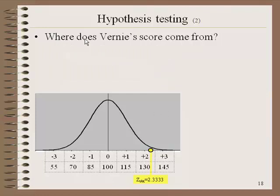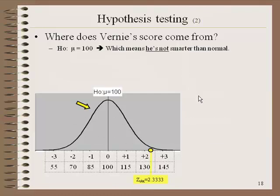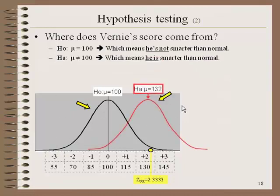The critical question is where does Vernie's score come from? Remember, the null is saying that he's not smarter than normal — that he comes from the normal distribution where mu equals 100. The alternative is that he's smarter than normal; it could also be that he's less smart, but since the score is on the right-hand side, we'll assume he's probably smarter. I'm suggesting there might be a different distribution his score comes from, and if his score came from that alternative distribution, that would be the same as saying he's smarter than normal people.